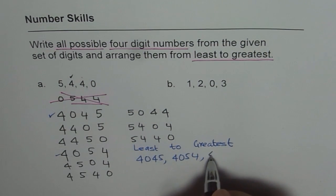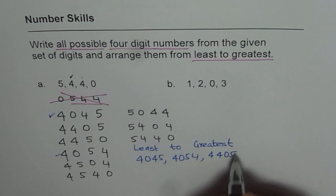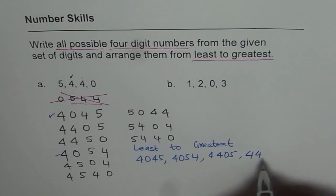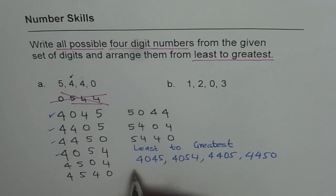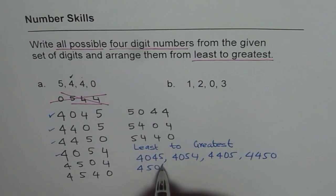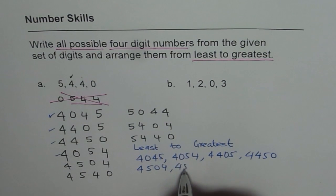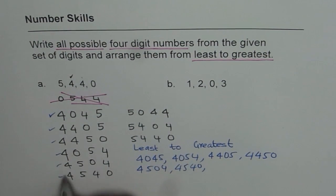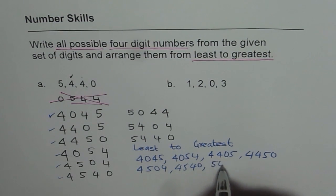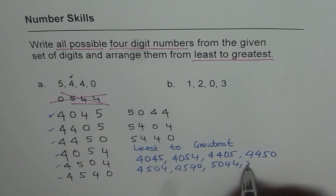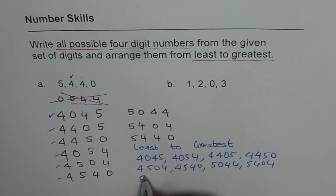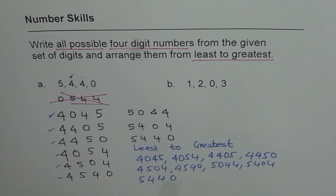So let's copy them all. Four, four, zero, five, four, four, five, zero, right? So we got these two. Then we have four, five, zero, four, four, five, four, zero. And last is five, four, four, zero, right? So we get all of them in order, right?